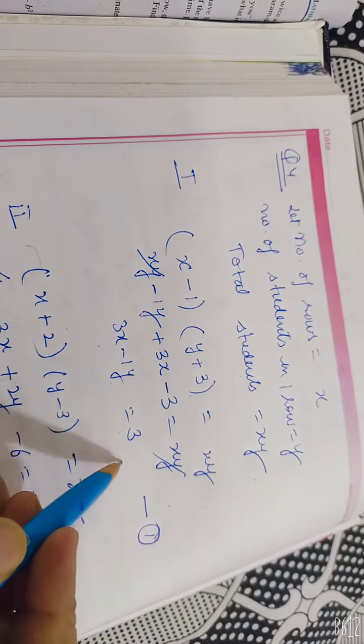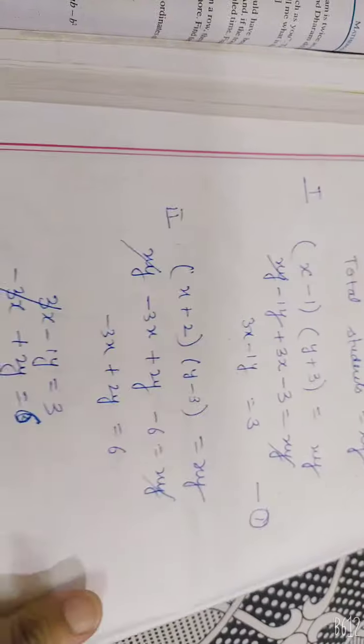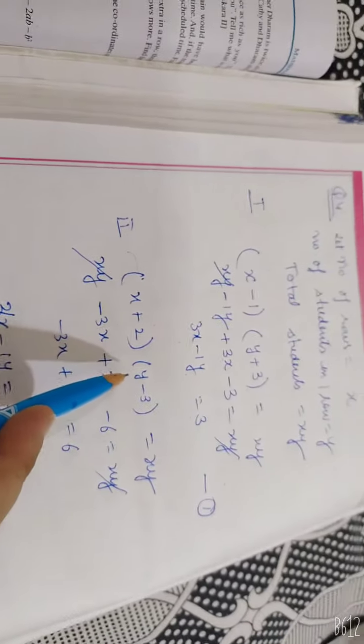xy minus 3 is equal to xy. Cancel. 3x minus y is equal to 3. This is the first condition. Second condition is if 3 students in a row are less than a row, then row is 2 extra.